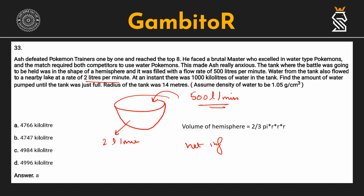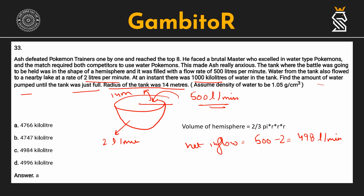So the net inflow will be 500 minus 2 equals 498 liters per minute. At an instant there was 1000 kiloliters of water in the tank initially. We need to find the amount of water pumped until the tank was just full. The radius of the tank was 14 meters — so this is a hemispherical tank. We have to calculate how many liters of water would have been put in from the 500-liter-per-minute inflow until the tank was filled.